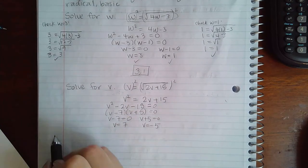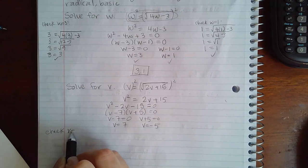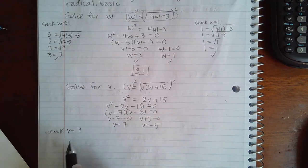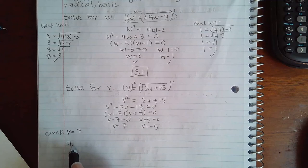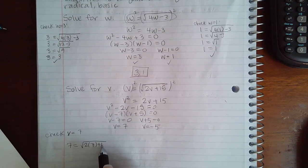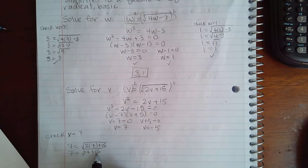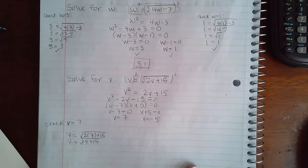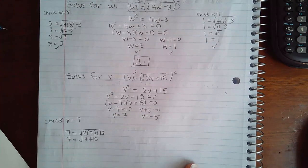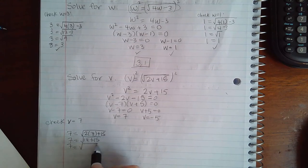And now we need to check each solution. So first I'm going to check is v equal to 7. So we have 7 equals square root of 2 times 7 plus 15, so we get 14 plus 15, and then we get 29. And 7 doesn't, there's no square root of 29.